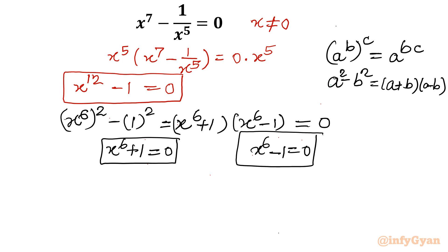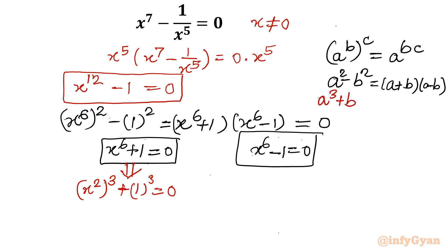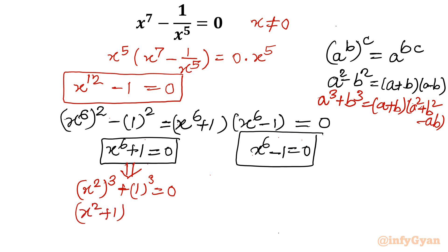Let me take the first case first: x power 6 plus 1 equal to 0. We will rewrite this as x square whole cube plus 1 whole cube. Now the third algebraic identity applies — a cube plus b cube equals a plus b times a square plus b square minus ab. Applying it: x square plus 1, times x power 4 plus 1 minus x square, equal to 0.